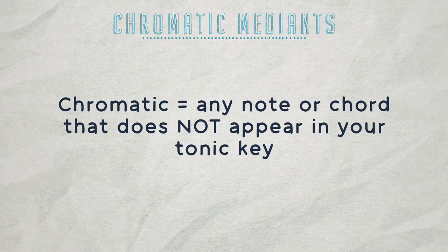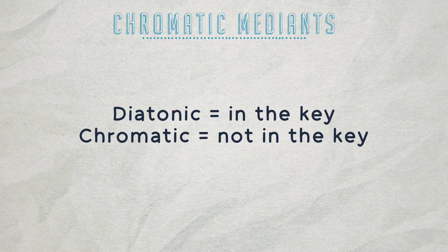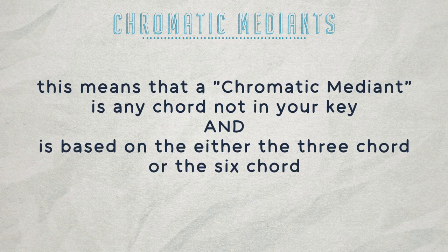Now we know what the word mediant means. Let's talk about what chromatic means. Chromatic is any note or chord that does not appear in your key. Diatonic means in the key. Chromatic means not in the key. This means that a chromatic mediant is any chord not in your tonic key and is based on either the three chord or the six chord.